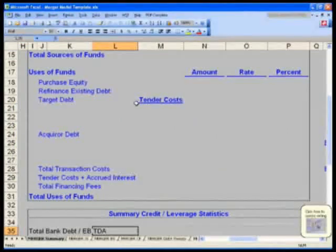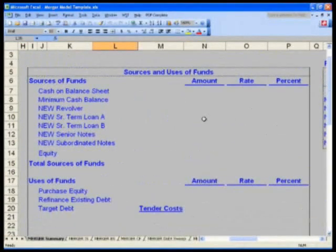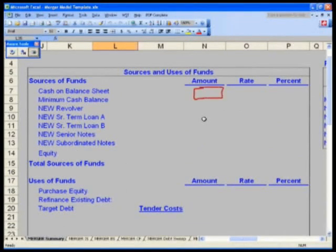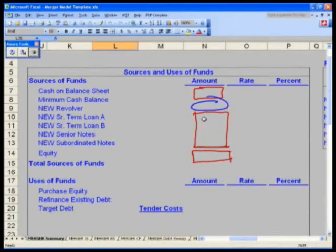After we finish the uses of funds, we'll do our sources of funds. Our sources of funds will simply bring in the amounts from the cash and minimum cash balance, as well as our new structure, the amount of equity that we will issue, and then our revolver which will ultimately balance it. This will be significantly shorter and quicker to calculate.